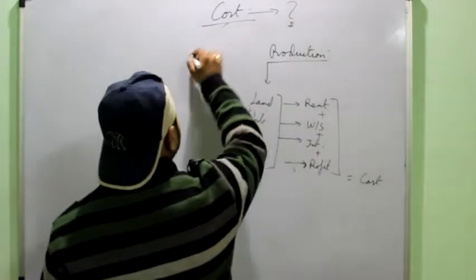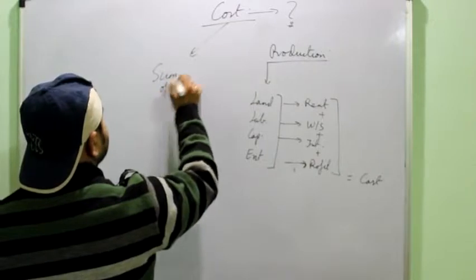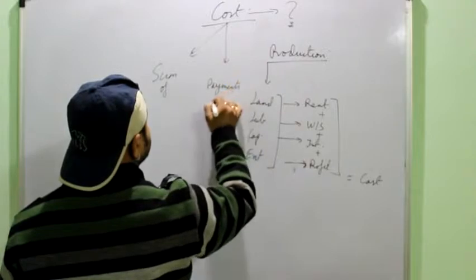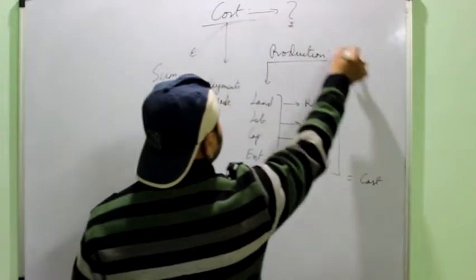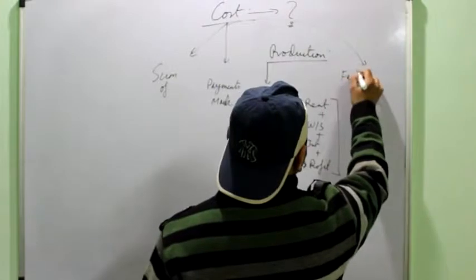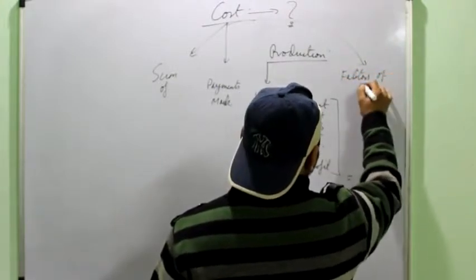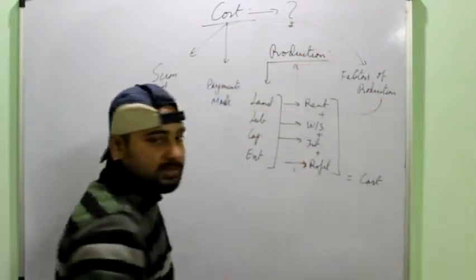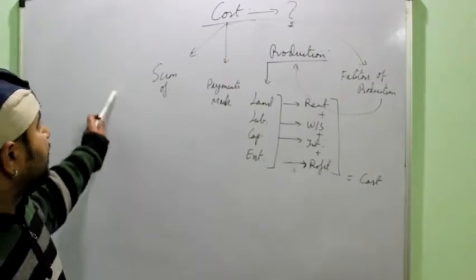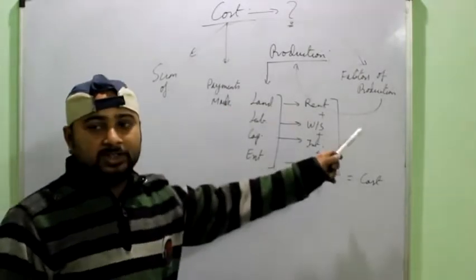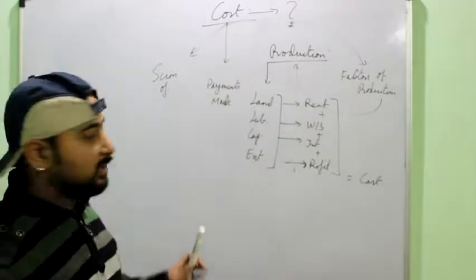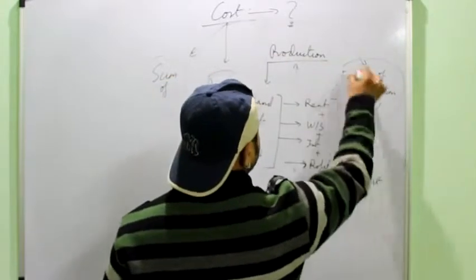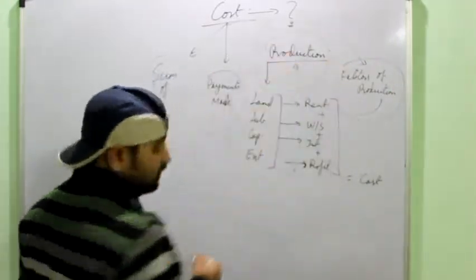Cost can be defined as the sum of the payments made to the factors used in the production process. It is the sum of the payments made to the factor of production used up in the production process. All these are the keywords of the definition: sum of payments made, factor of production used in the production process.